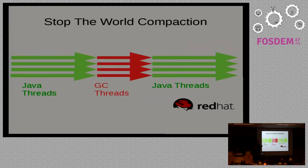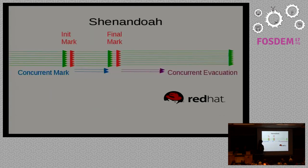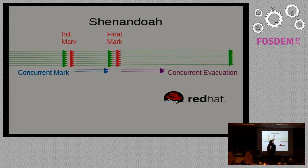With stop-the-world compaction, Java threads run for a while, then stop, and then GC threads do the compaction, then Java threads start again. Shenandoah is a different beast. With Shenandoah, you run your Java threads for a while, stop and do a quick scan of the thread stacks, then start a concurrent mark while the Java threads run again. You do a quick stop and scan of the thread stack for a final mark, then do concurrent evacuation while the Java threads are running. So we have two very, very short pauses — just as long as it takes to scan your thread stacks.